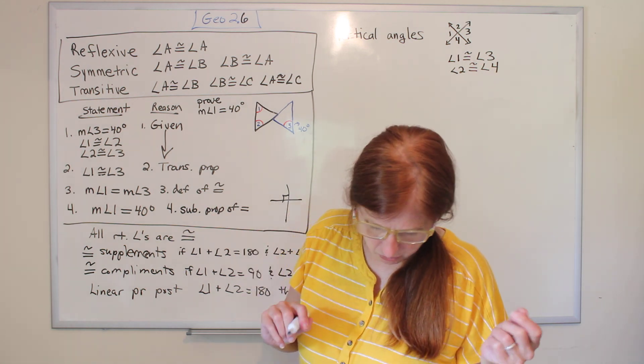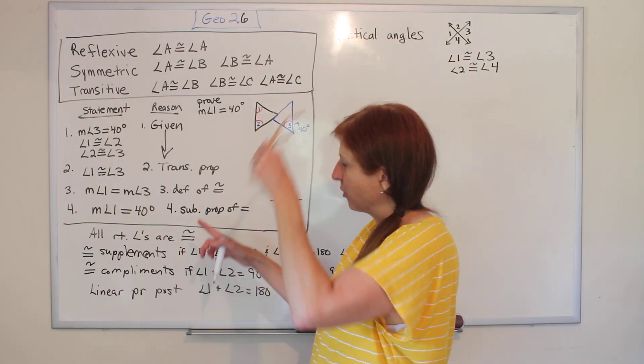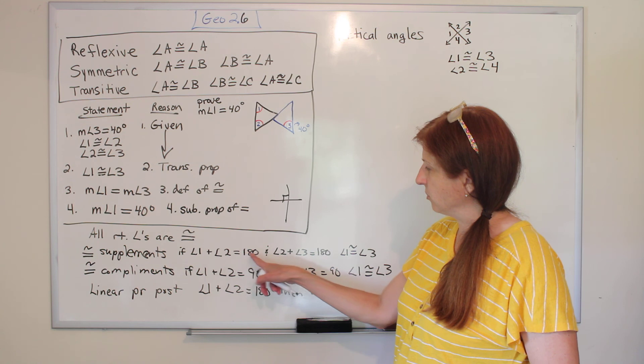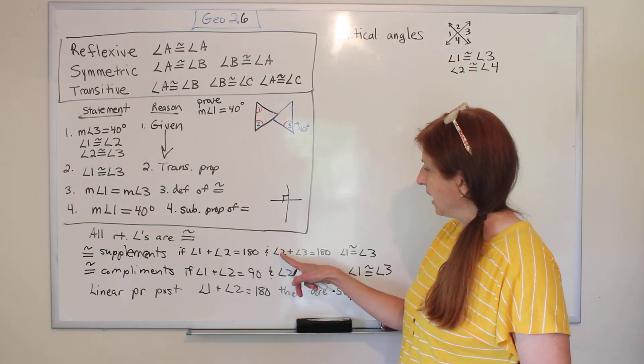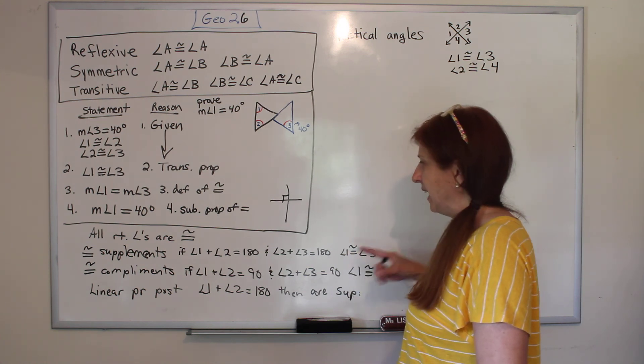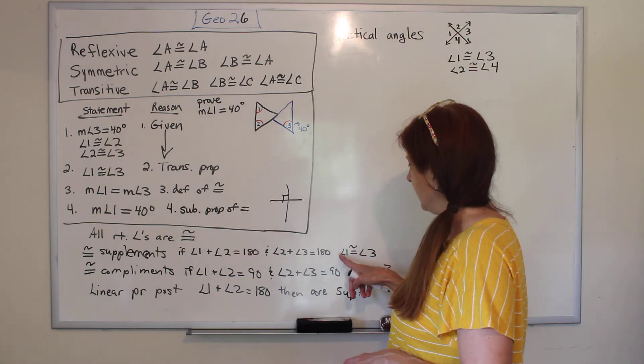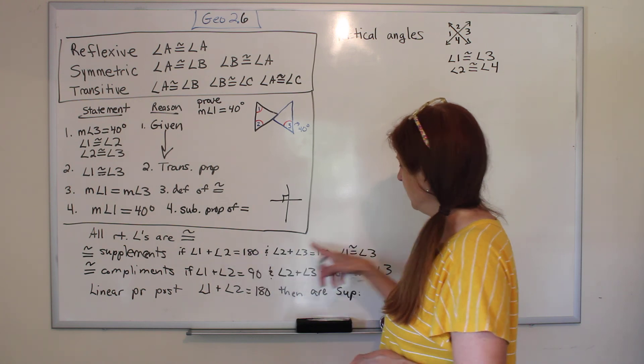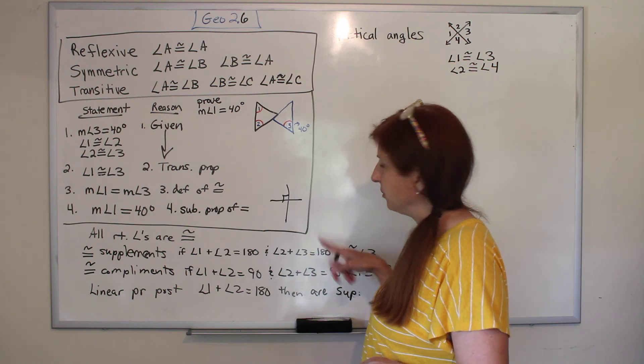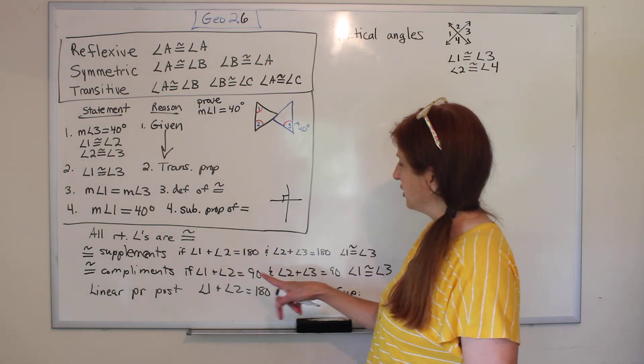Okay, the next theorems are on page 111, and it's the congruent supplements theorem. It says if angle one plus angle two is 180, and angle two plus angle three is 180, then one is congruent to three. This is really a lot like the transitive property. If both of these equal 180, then one equals three, because both of them are what was added to two to get 180. And remember, supplement means it adds up to 180, complement means it adds up to 90.